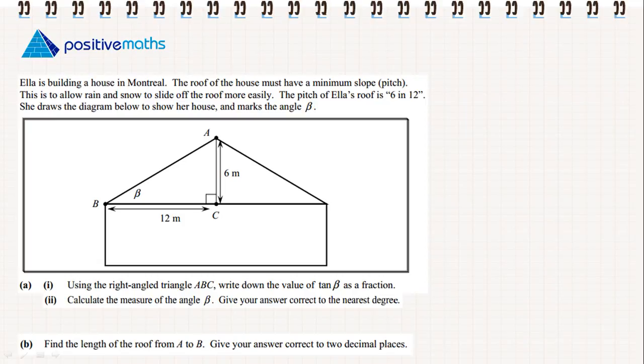Part 1: Using the right-angle triangle ABC, write down the value of tan β as a fraction.